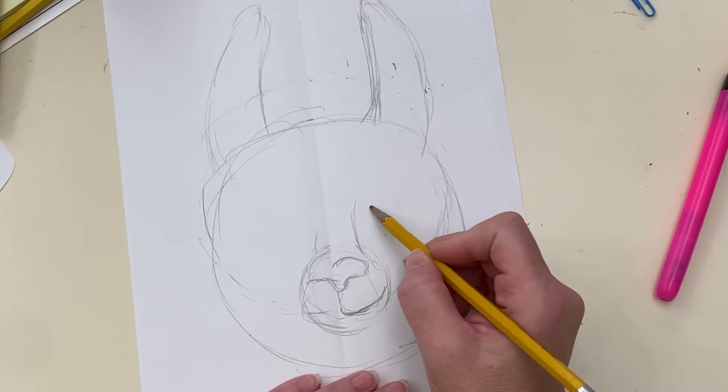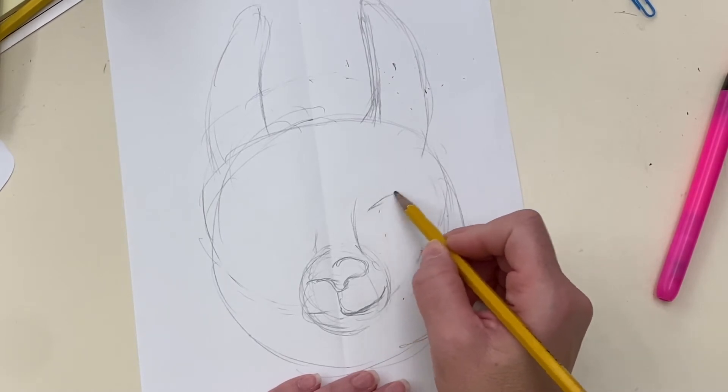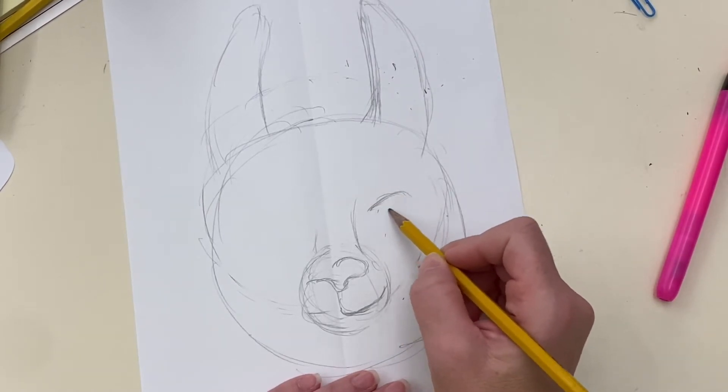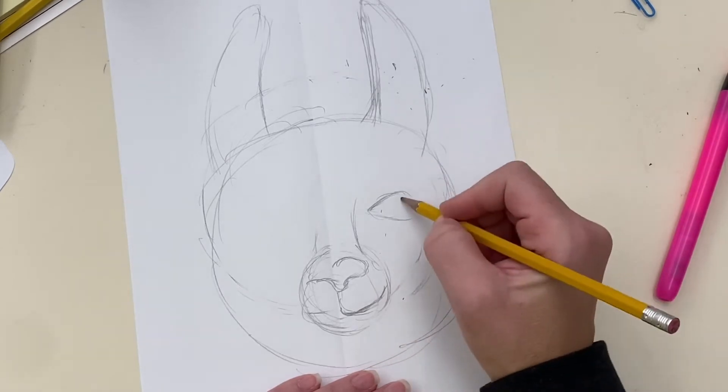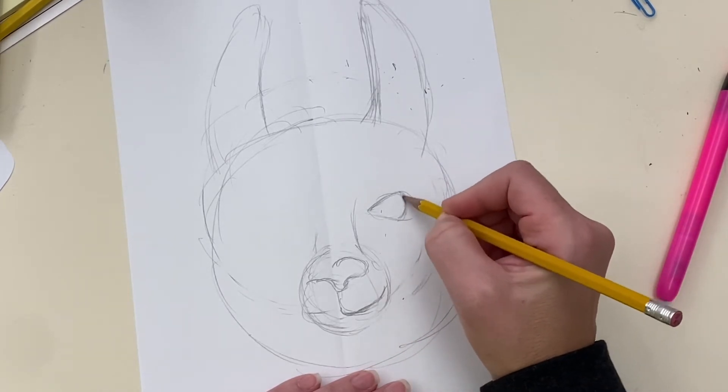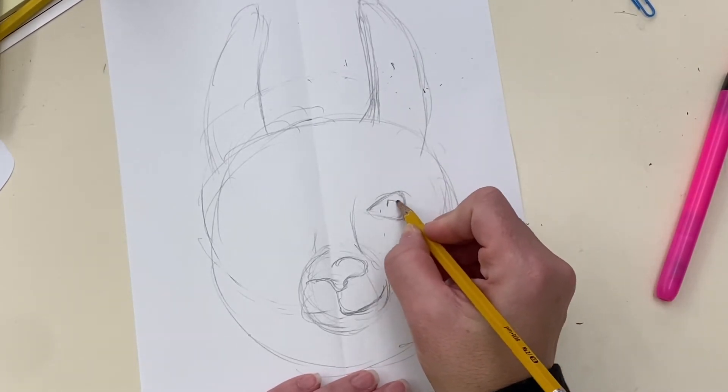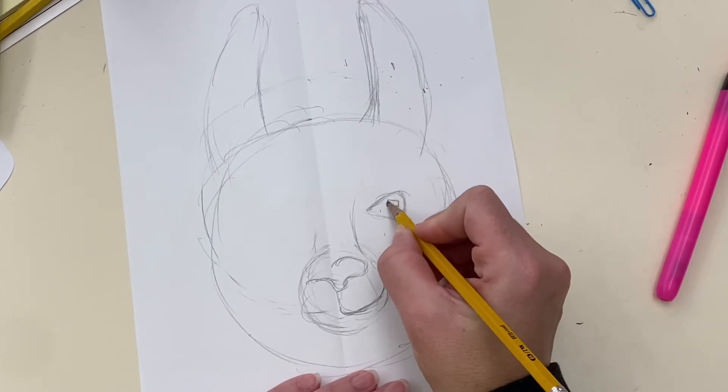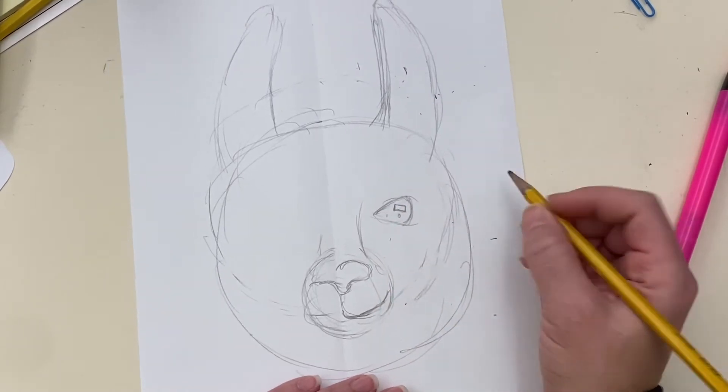Okay the eye is pretty big. The picture that I have of my llama it doesn't have a highlight in the eye but it's always good to draw a highlight because it makes it look more realistic.